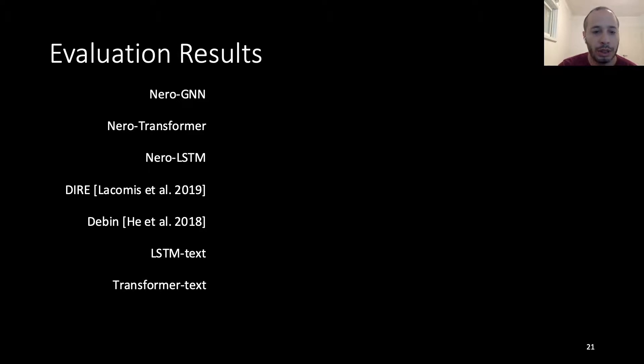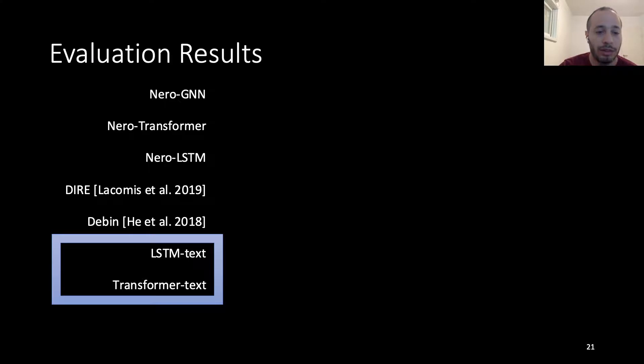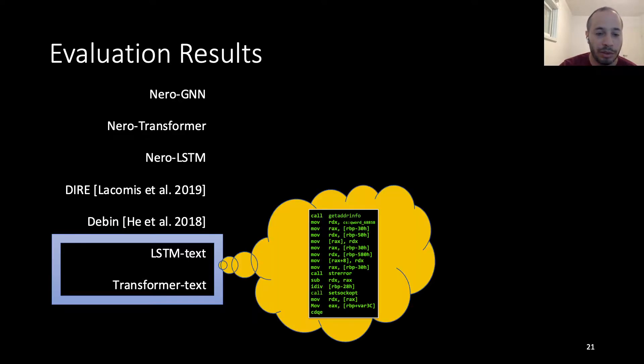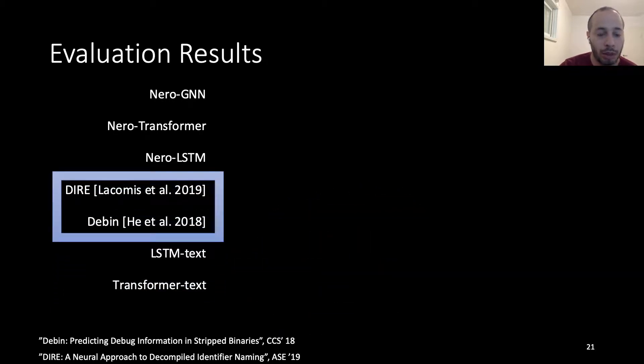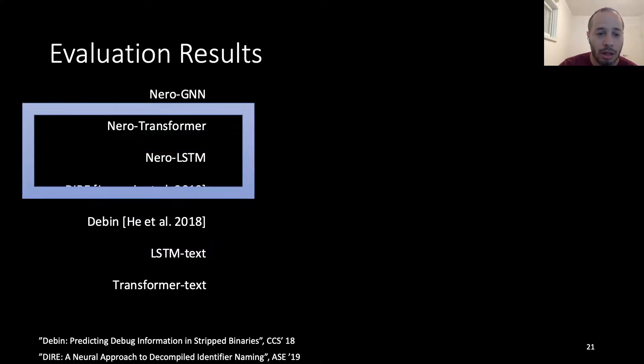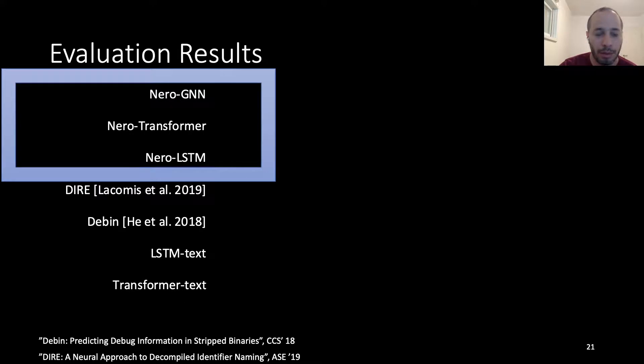In our evaluation, we compared ourselves to two groups of baselines. The first one is the vanilla LSTM and transformer text modules in which we fed the disassembled code. We also compared ourselves to two recent works, Debin, which is a non-neural module, and Dire, which is based on decompiled binaries. For our approach, we had three variations based on LSTM, transformer, and GNNs.